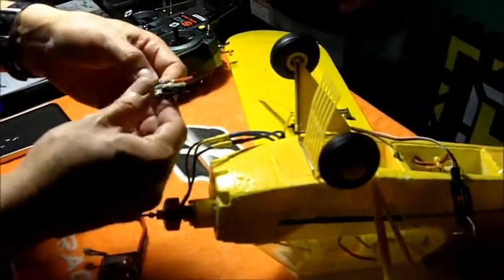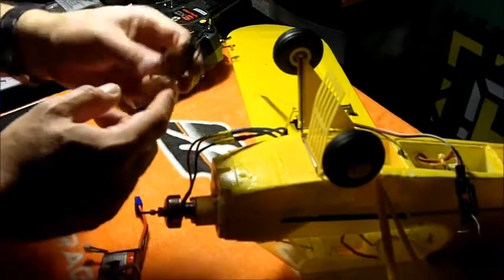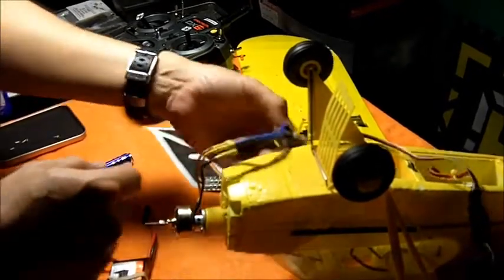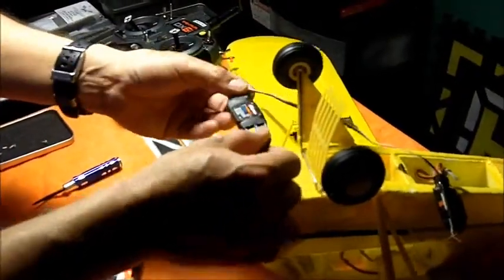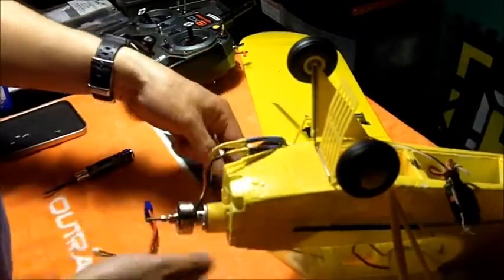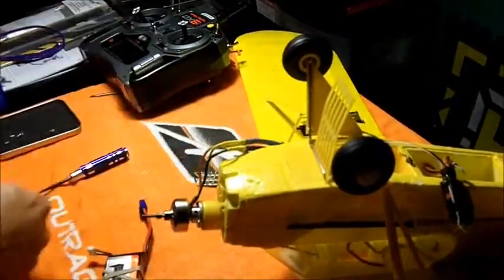This is an ESC with a built-in BEC, and yes, a linear BEC can get hot, but this shouldn't happen. So I put a proton on it. I thought it was a hobby wing, but it's an Exceed proton, 30 amp, and I'm going to show that the motor, hopefully, will start up and everything will work just fine.